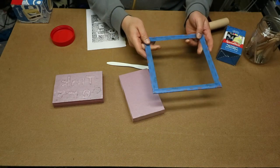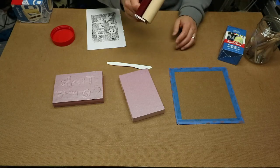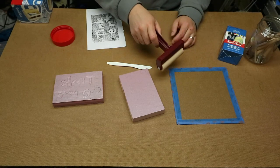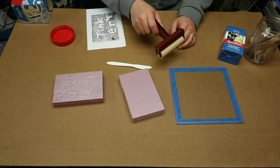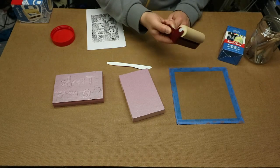This is simply a piece of glass that we will use as our inking surface. I have a brayer here. This is just an ink roller just to roll the ink out.